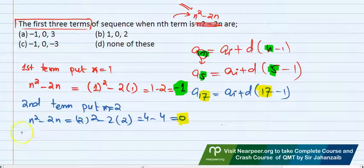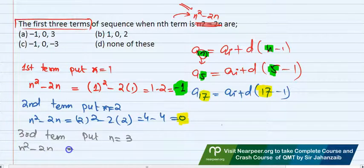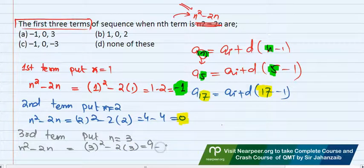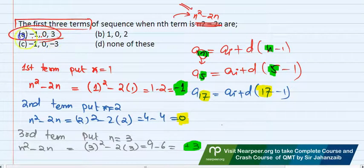And to find the 3rd term, we will do the same thing we have been doing. We will put n equal to 3. Our equation is n square minus 2n equal to 3 square minus 2 into 3. 3 ka square is 9, 2 into 3 is 6, so 9 minus 6 is 3. Your correct answer is minus 1, 0 and 3, option A.